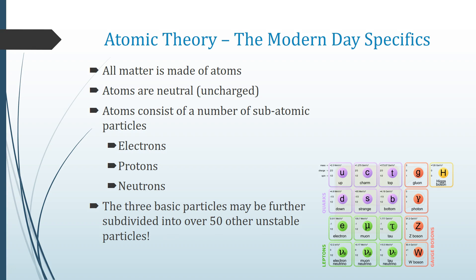The modern day specifics of what we consider to be the atomic model is essentially that all matter is made up of atoms. The atoms are neutral and uncharged, so the number of protons and electrons is equal in a neutral atom. They consist of a number of subatomic particles. For chemistry, what we're really looking at is that they consist of electrons, protons, and neutrons.